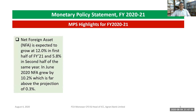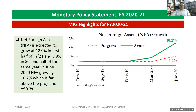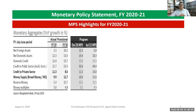Net foreign assets are expected to grow at 12% in the first half of fiscal 2021 and 5.8% for the second half. In June 2020, net foreign assets grew by 10.2%, while the actual came in at 2% against a program of 4.2% in the previous year. Looking at the two-year growth: net foreign asset growth for fiscal year June 2020 is 10.2%, the program for December 2020 is 12.5%, and for June 2021 is 5.8%.